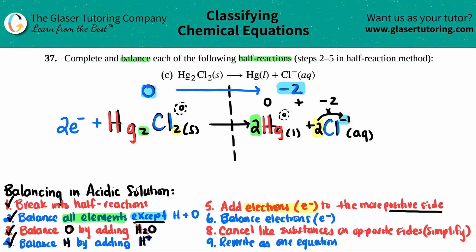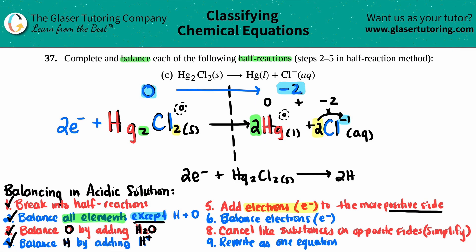You're done with this question. If you just want to rewrite it nice and neat, the final answer is: two electrons plus Hg2Cl2 solid yields two Hg liquid plus two Cl minus. That's the final answer. Hopefully this helped — let me know in the comments if it did. You can like the video; that gives me a heads-up as to whether I'm doing my job right. I love helping you guys and I hope this makes sense. I'll see you all in the next lesson. Have an awesome day — let's keep studying hard. Bye-bye.